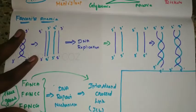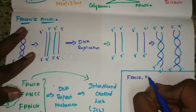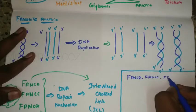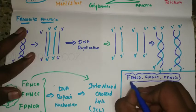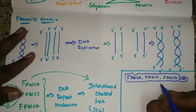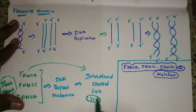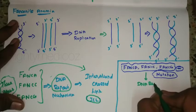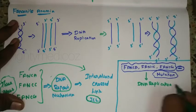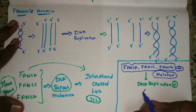When there is a mutation in the Fanconi genes, their ability to repair interstrand cross-links is lost. As a result, DNA replication cannot proceed properly, and normal cell replication is disrupted.